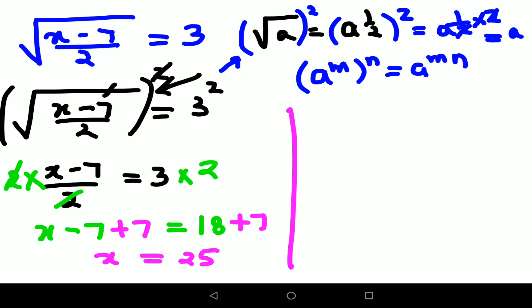Now let's put this value of x over here and check we are getting the value of 3 or not. So we have root of 25, x is 25 minus 7 is 18 upon 2. So that gets you root 9, that gets you 3.